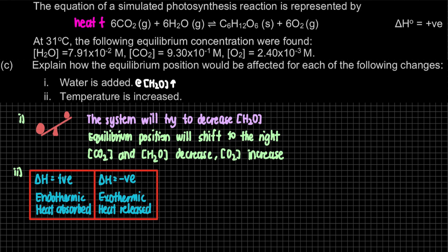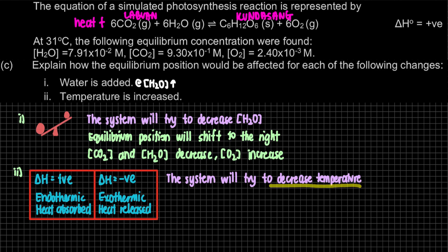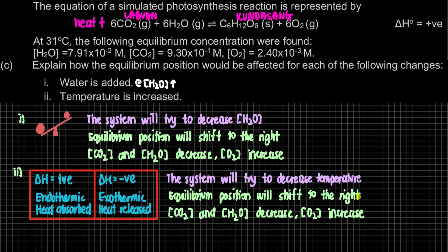If delta H were negative (exothermic), heat would be on the product side. For this endothermic case, heat is on the reactant side. Increasing temperature means adding heat. The system will try to decrease temperature by absorbing heat — consuming it from the reactant side — so the equilibrium position shifts to the right, the same direction as in part 1.